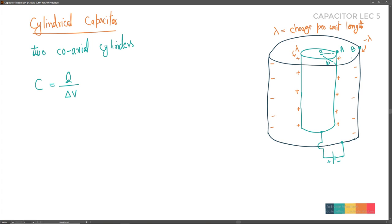Because the inner shell is a conductor, its entire surface is at the same potential - so any point A on the inner shell is fine. Similarly, the entire outer shell surface is at the same potential. The potential at point A (inner shell) will be greater since electric field points outward from A to B. So we need VA - VB.